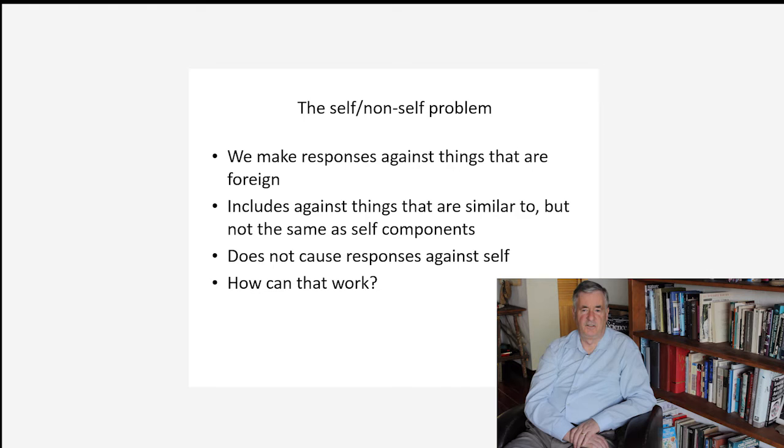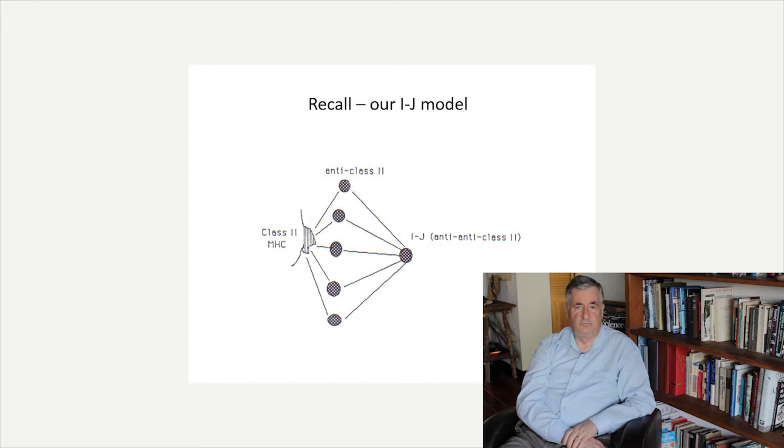We now come to an age-old problem for immunology. How does the immune system discriminate between things that are foreign and things that are part of self? We want to be able to respond immunologically to things that are foreign and get rid of them, but at the same time, we don't want that immune response to cross-react with any self components. So how could that work, and how can network theory help us to understand it?